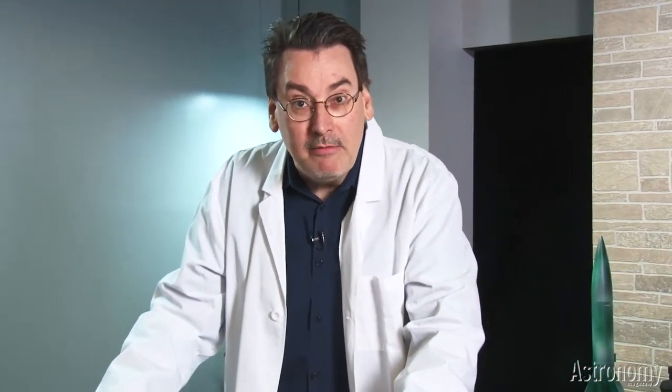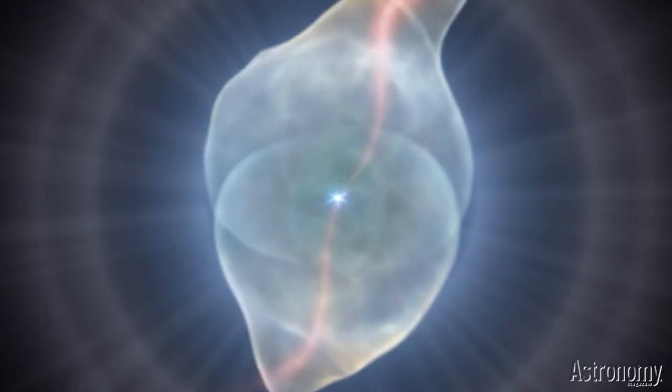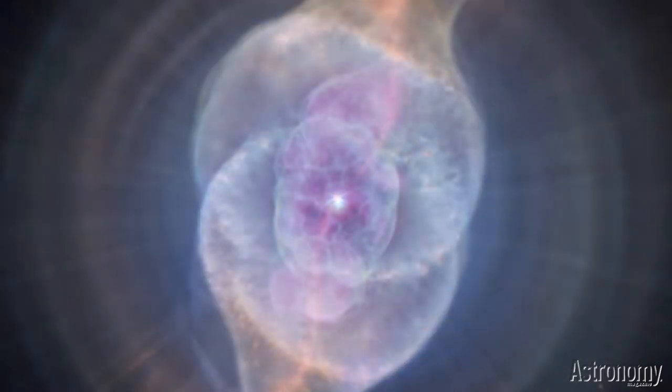The expanding shell of gas around the hot remnant star will now form a beautiful display for the galaxy, a planetary nebula. The planetary nebula, a stellar death shroud, will last about 50,000 years before dissipating into the interstellar medium.